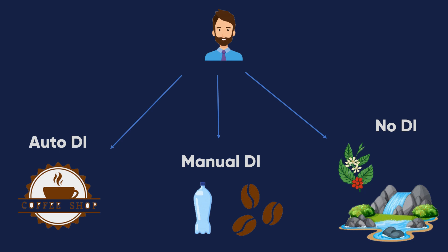The third one is automated dependency injection. He is not responsible for making the coffee, getting the beans, or getting the water — he just orders. These three cases are the three different ways for making coffee. Let's go to Android Studio and implement these three types to see the importance of using Dagger and dependency injection.